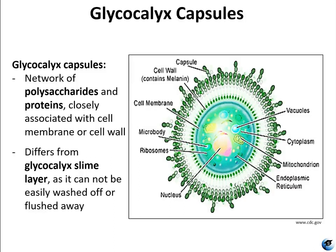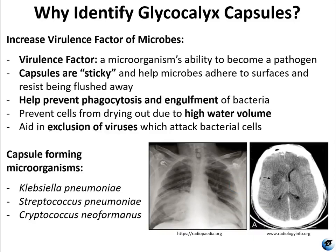Glycocalyx capsules are a network of polysaccharides and proteins tightly associated with the cell wall or cell membrane. That's different from a glycocalyx slime layer, which can be washed away — capsules cannot; they're part of the cell. Certain bacteria and yeast have this protective outer structure called a capsule, and capsule production increases virulence in some microbes, such as Bacillus anthracis, Cryptococcus neoformans, and pneumonias, by making them less vulnerable to phagocytosis.